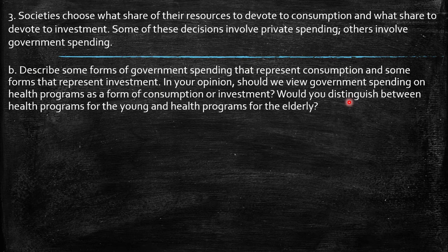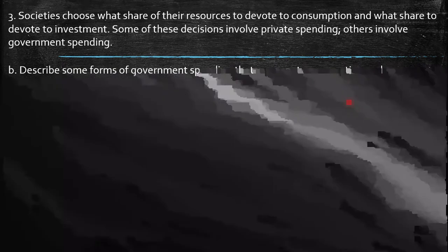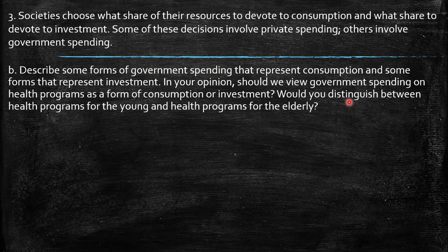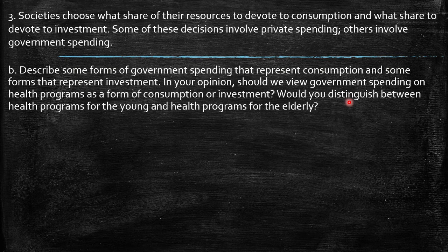The question also asks to describe forms of government spending that represent consumption versus investment. For example, new capital provided to public firms is more related to investment, while goods and services for the normal use of government are more considered as government expenditure — that is, consumption.